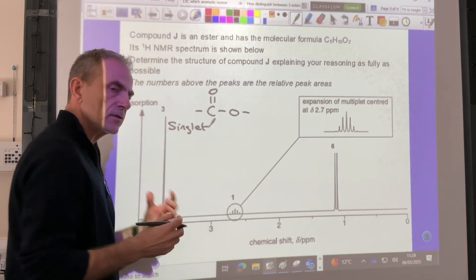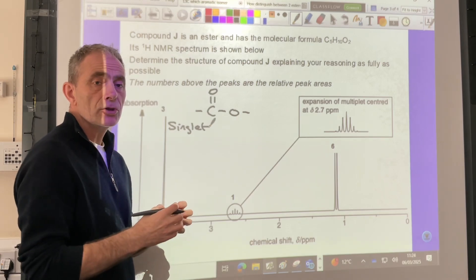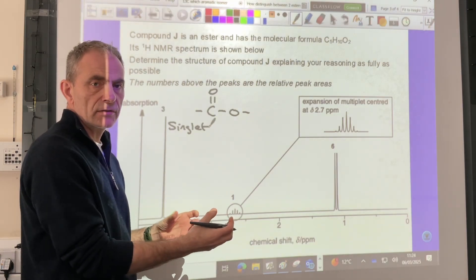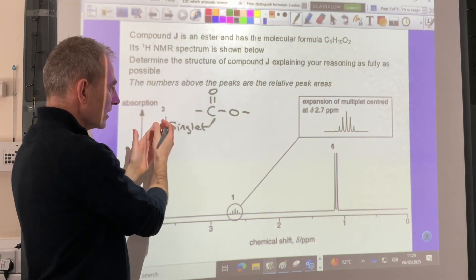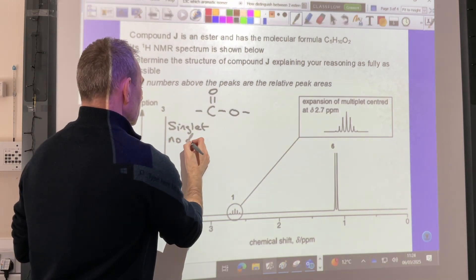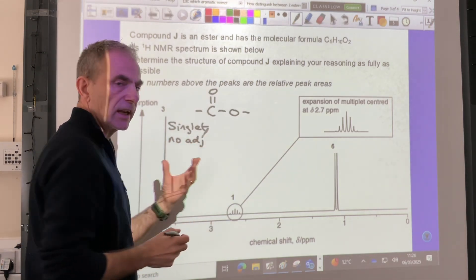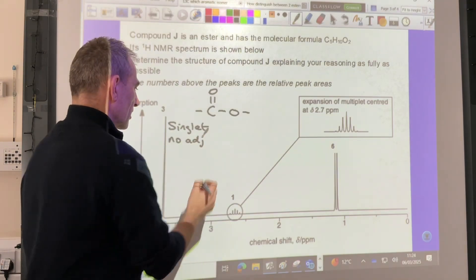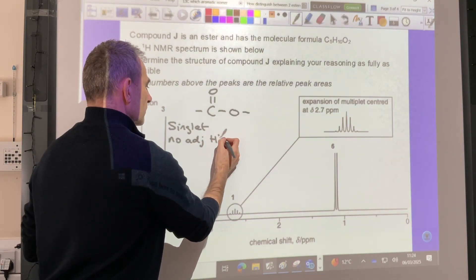What does a singlet mean? It means there are no adjacent protons that could split these three. So I'm just going to write under there, no adjacent protons. So these protons are effectively on their own.